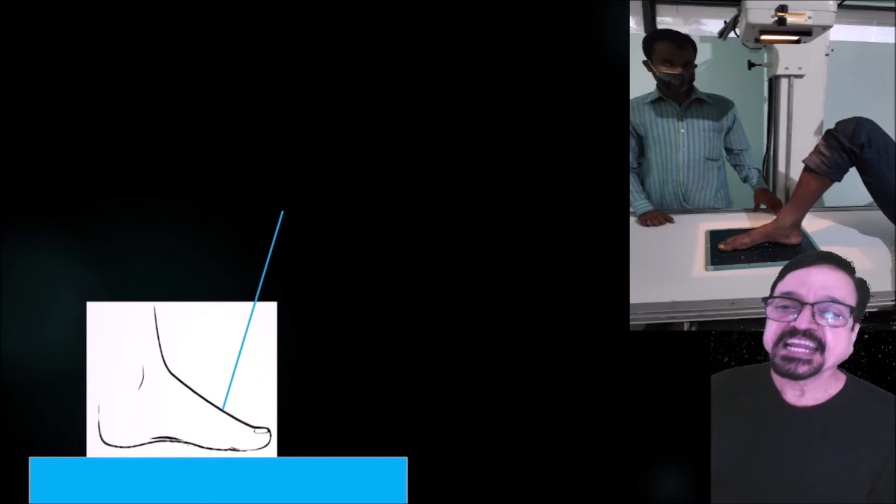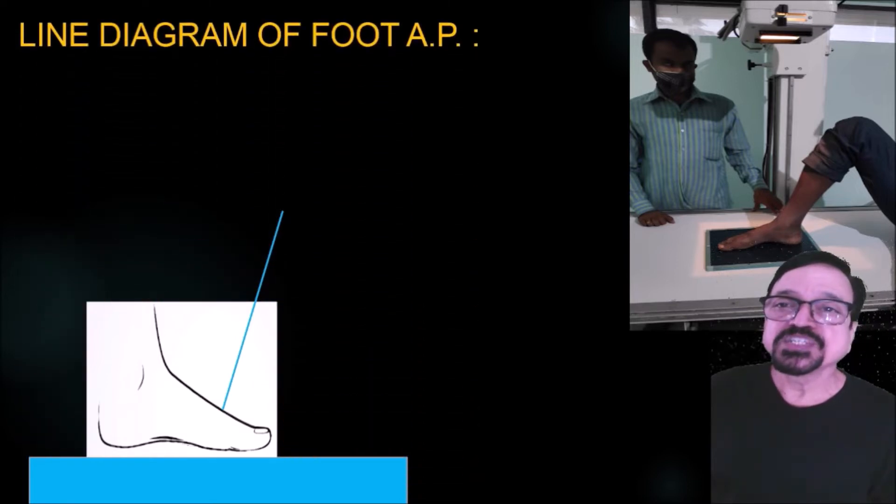In this we are seeing that the ray is coming with slight angulation. Now this is taken when we want to take the tarsal bones, and when we want to take metatarsals, the angulation is usually straight. We will see it in more detail when we are going to see the radiographs.